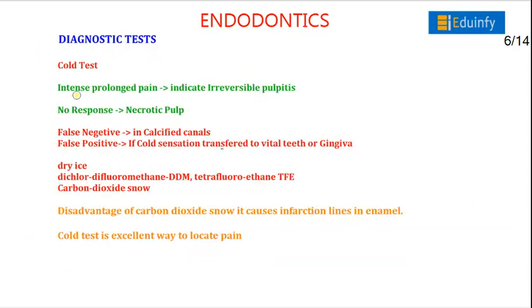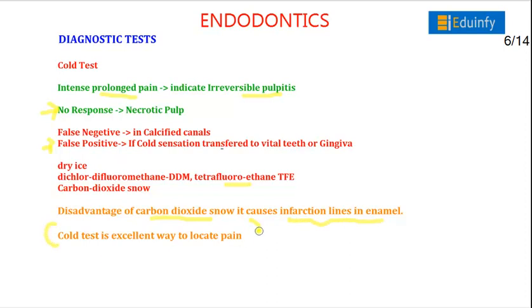In the cold test, intense prolonged pain indicates irreversible pulpitis, and no response indicates a necrotic pulp. False negative results occur in calcified canals, and false positive results occur when cold sensation is transferred to vital teeth or gingiva. Materials used include dry ice, carbon dioxide snow, dichlorodifluoromethane, or tetrafluoromethane. A disadvantage of carbon dioxide snow is that it causes infraction lines in enamel. The cold test is an excellent way to locate pain.